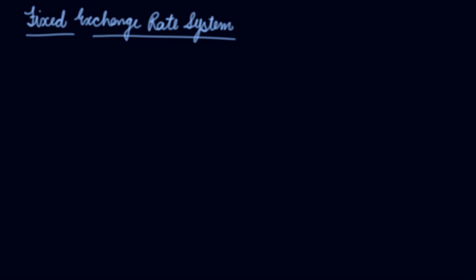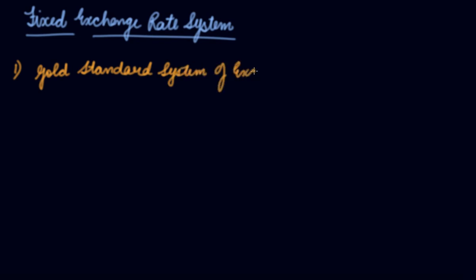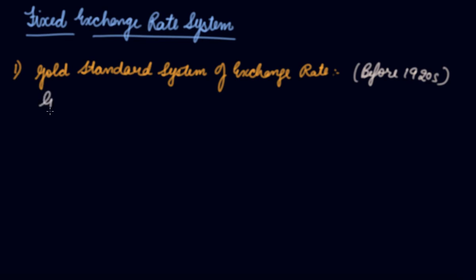In this video, we will be studying about the fixed exchange rate system. The fixed exchange rate system includes two systems. Number one is the Gold Standard System of Exchange Rate, which was used before the 1920s. Gold was taken as a common unit between currencies of different countries.